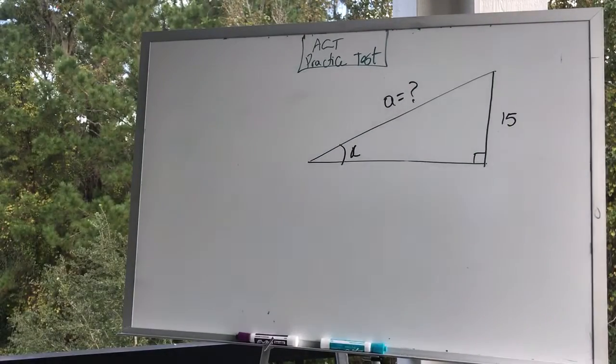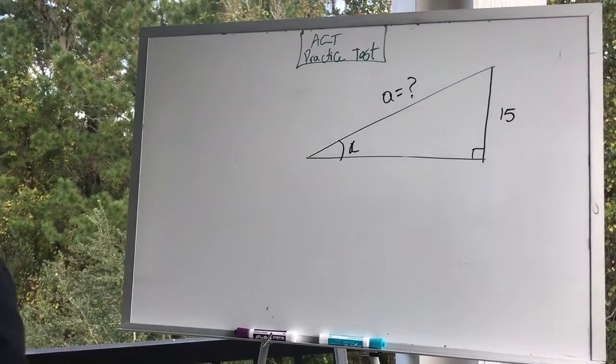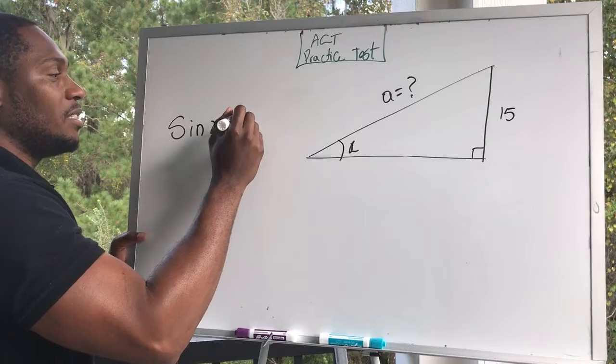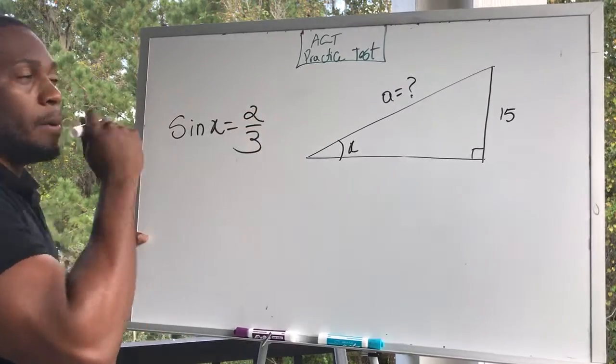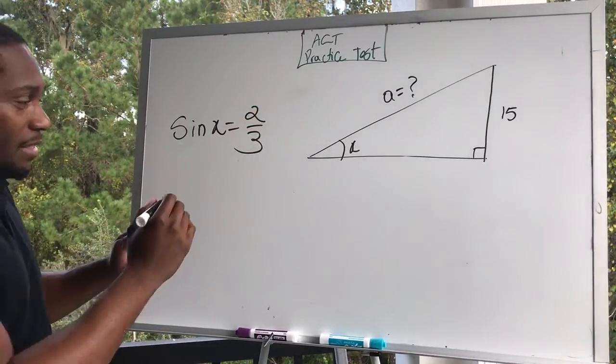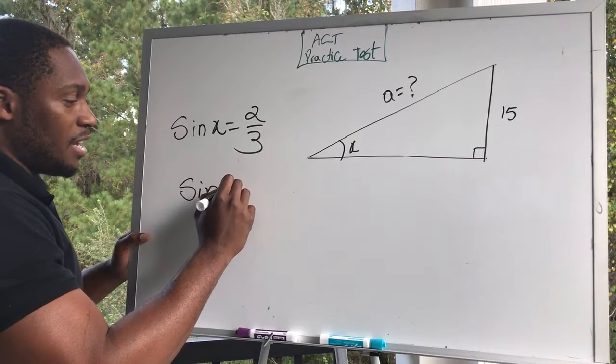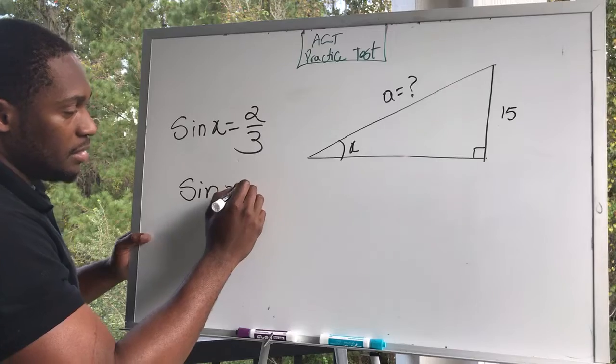Well, we have this on the board. So we say the sine of x, sine of x is equal to two-thirds. So remember the formula for sine. Sine of an angle, let's call it angle x.